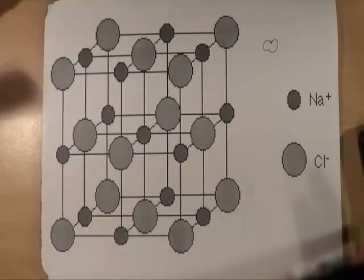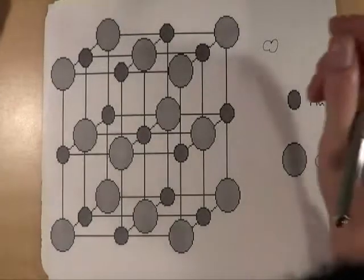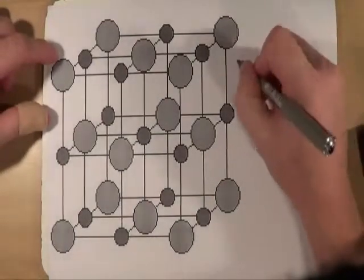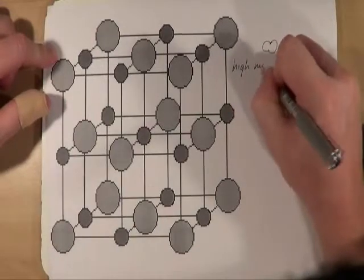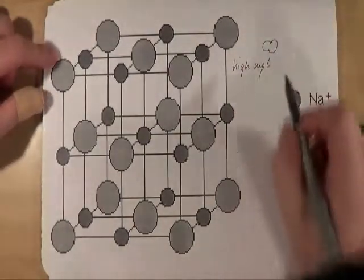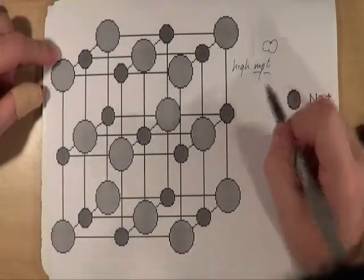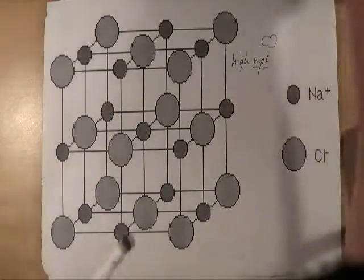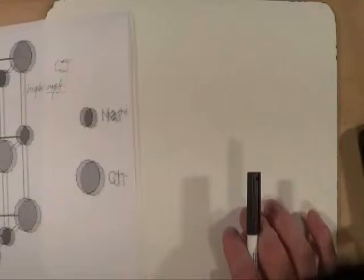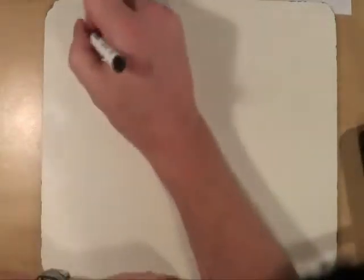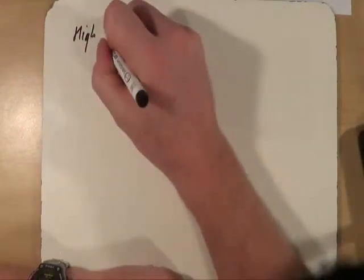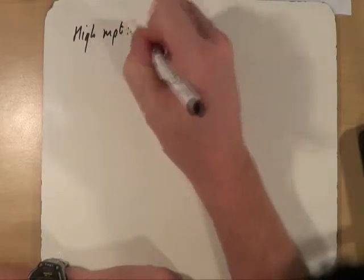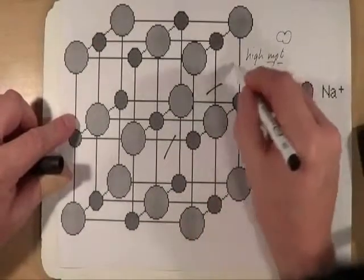So how does that then affect the properties? Well, first of all, giant ionic lattices have got extremely high melting points. Now why is that? Well, the reason for them having this very high melting point is because they have extremely strong bonds. In order to melt something, I've got to break bonds.